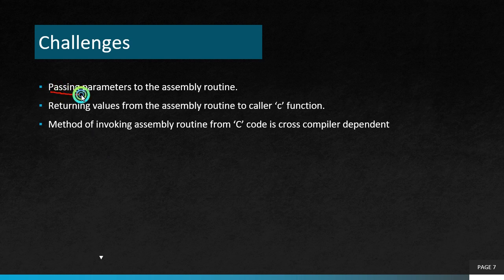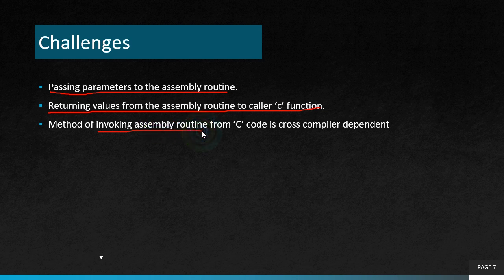The challenges are passing parameters to the assembly routine and returning the value from the assembly routine to the C function, which is the calling function. As you know, invoking the assembly routine is different in different cross-compilers — it is actually dependent on the cross-compiler. For different cross-compilers, there would be a different method for invoking. For efficient code, we have to read the cross-compiler's documentation. Let's take an example.